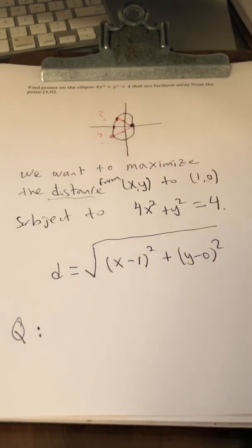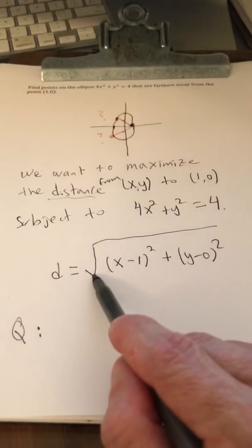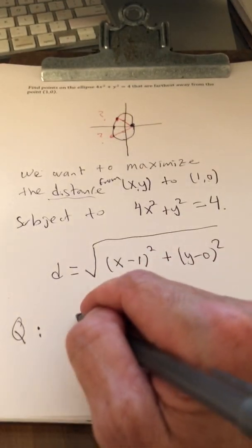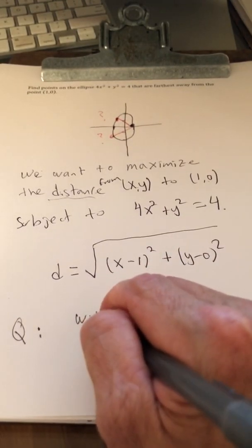Because the square root is an increasing function, so you can ignore the square root.